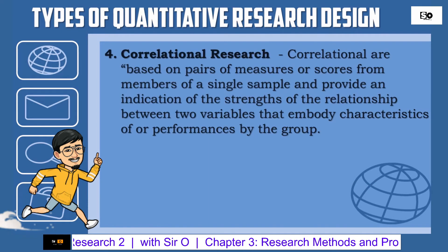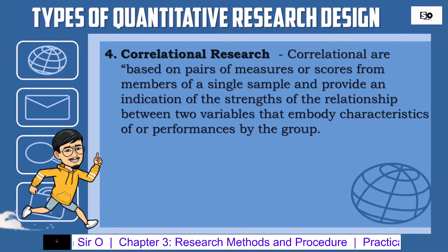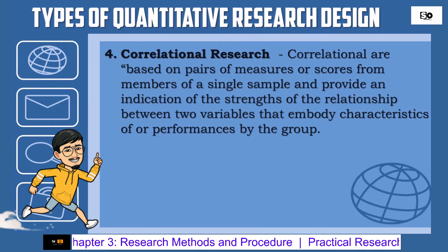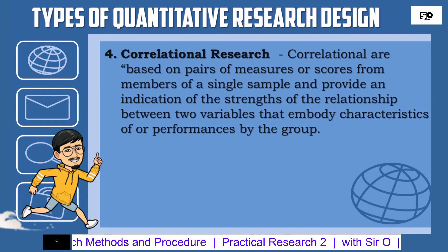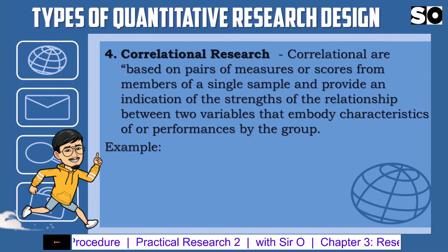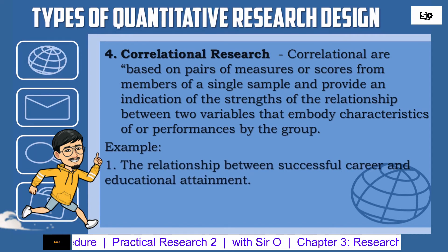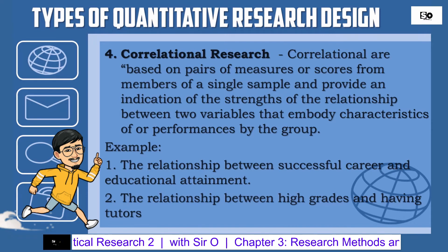Number 4: Correlational Research — correlational research is based on pairs of measures or scores from members of a single sample and provides an indication of the strength of the relationship between two variables. It tries to define the degree of relationship between two or more variables using statistical data, and seeks to interpret the relationship between and among a number of facts. Examples: 1. Relationship between successful career and educational attainment. 2. The relationship between grades and having tutors.